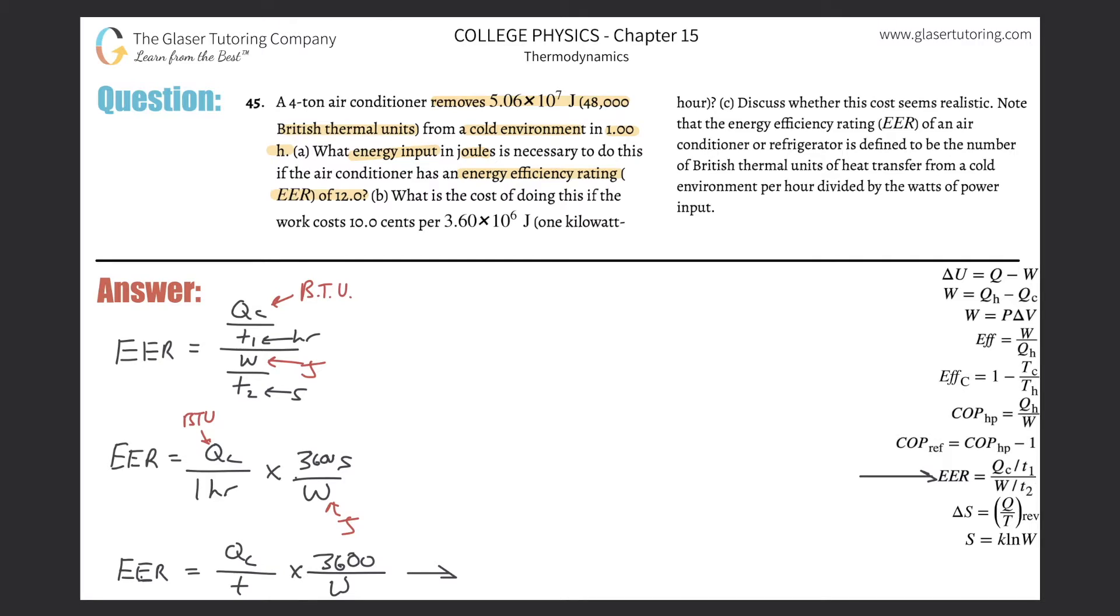it would look something like this now. It would be 3,600 times the heat removed from the cold environment in BTU, that I can't change, divided by then the work done in joules multiplied now by the time in hours.